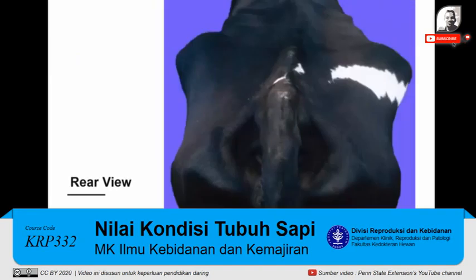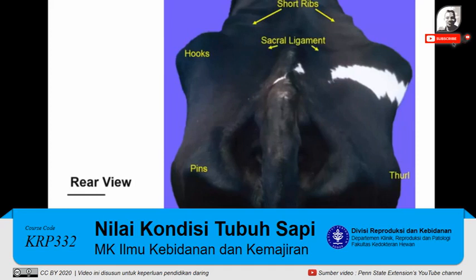From the rear of the cow, we again evaluate the hooks, the pins, the thurl, and the short ribs — and we also consider the sacral and tail head ligaments.